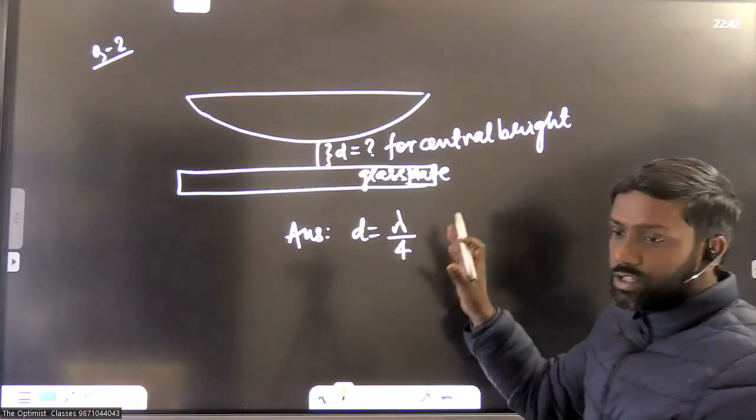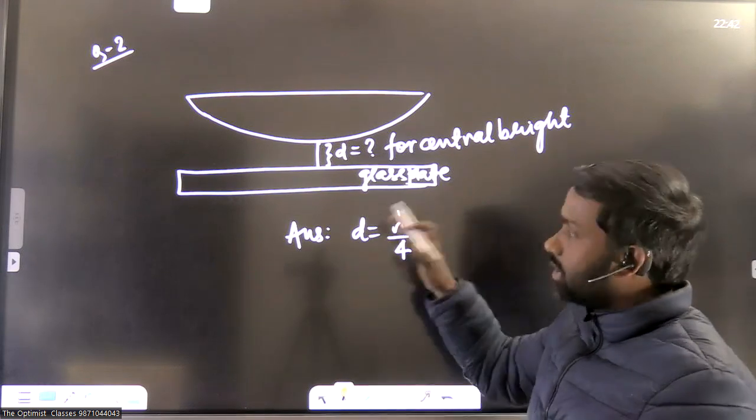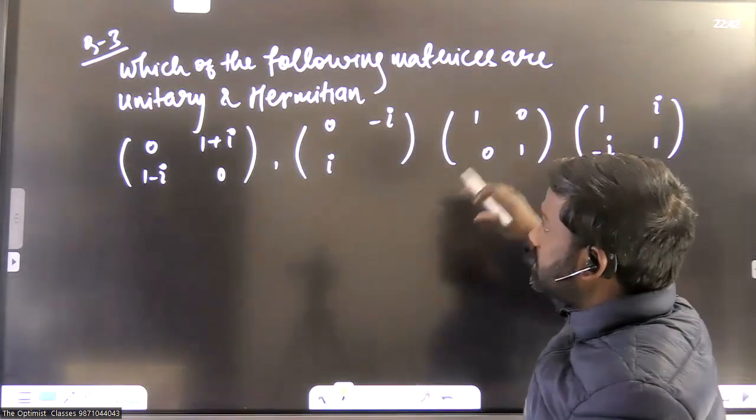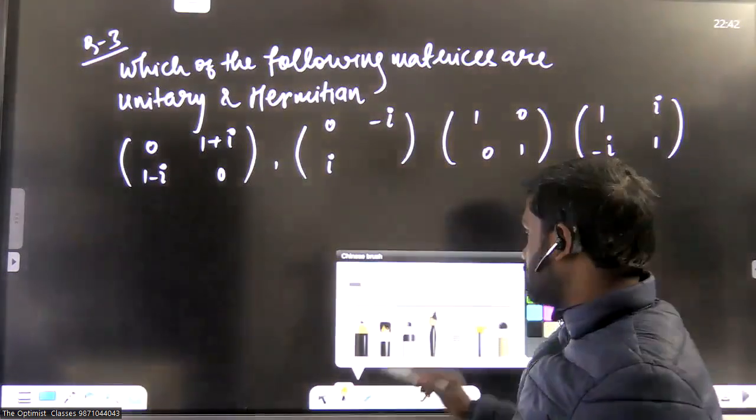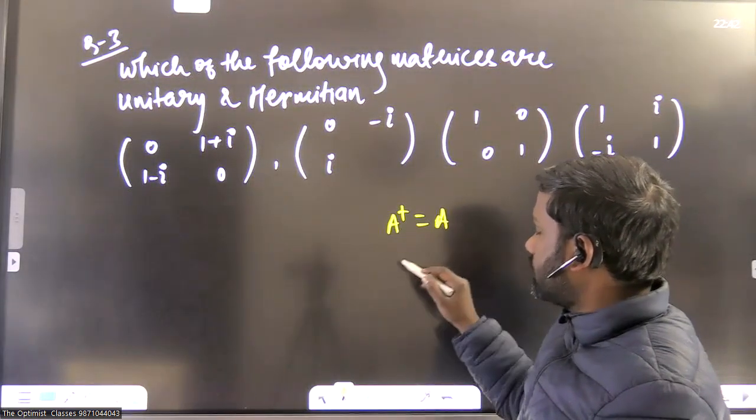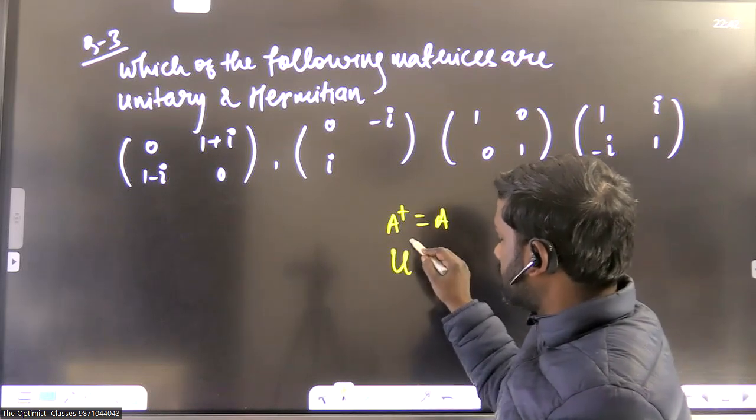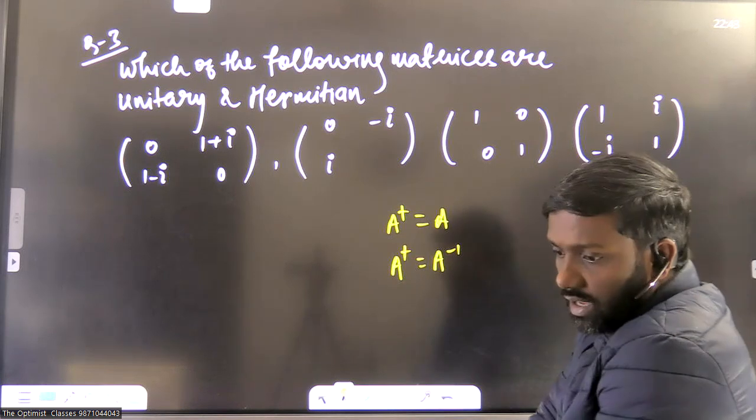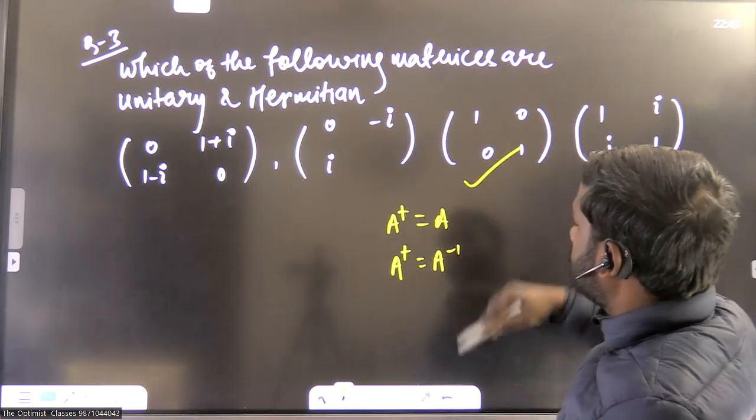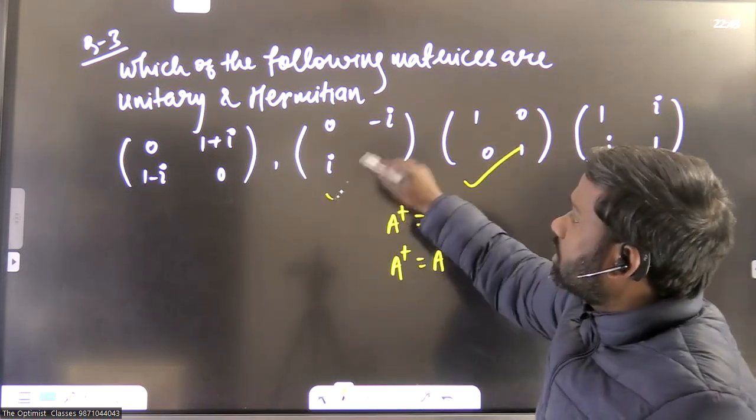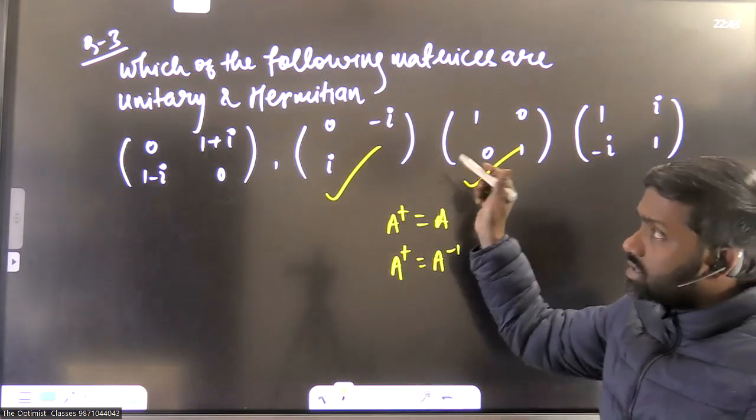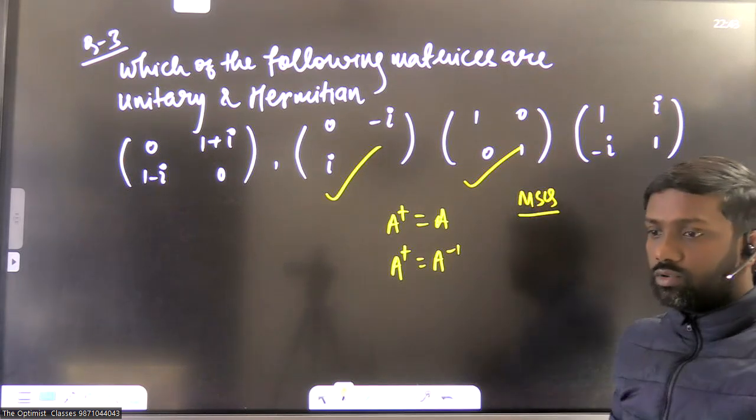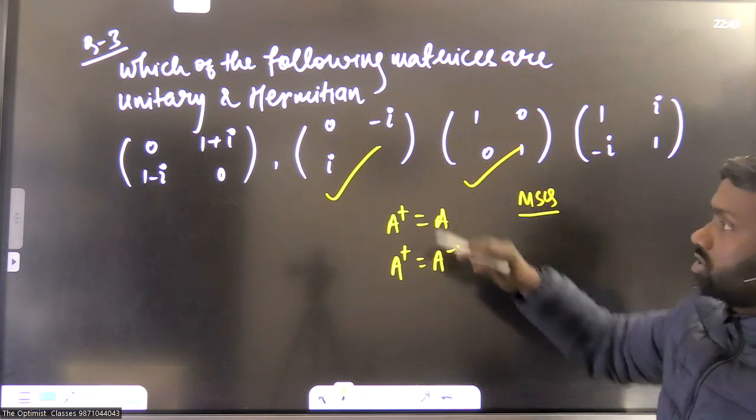This is again a question which I had discussed in class. I had told students that this question can be asked, and it was asked. There are four matrices and question says which is unitary and Hermitian. So we can just check whether we are getting A dagger equal to A condition of Hermitian, and here A dagger should be equal to A inverse. So if you do that, you will see that I checked it. Obviously, this is identity matrix, so it must be Hermitian and unitary. And this also comes out to be Hermitian and unitary. So these two are basically Hermitian and unitary. I think this must be a question of MSQ part, because two options are correct.